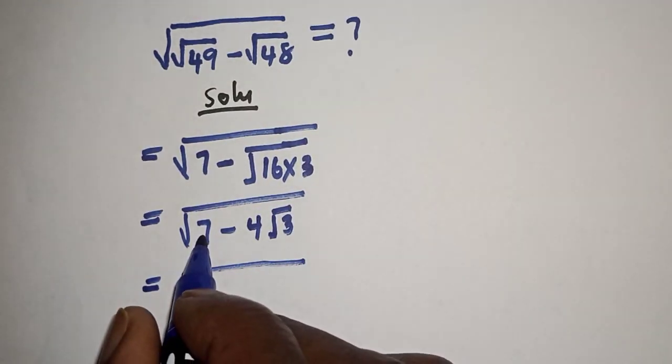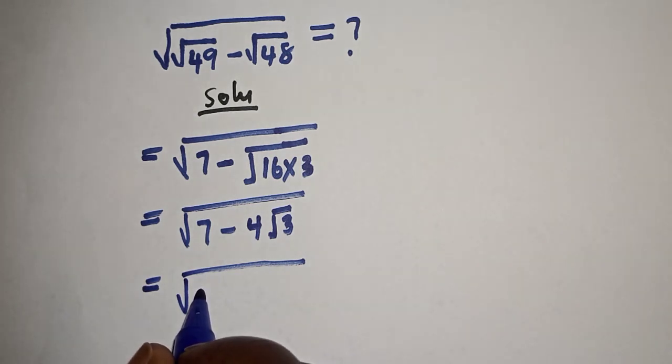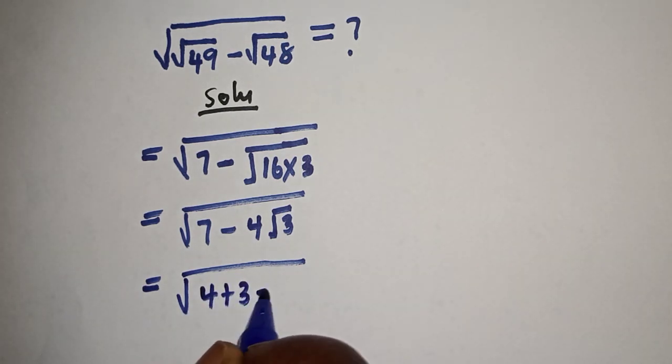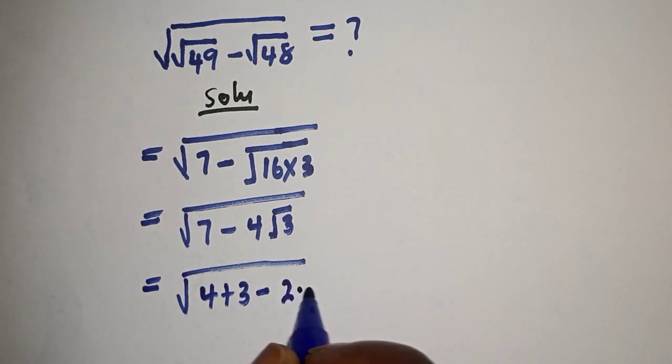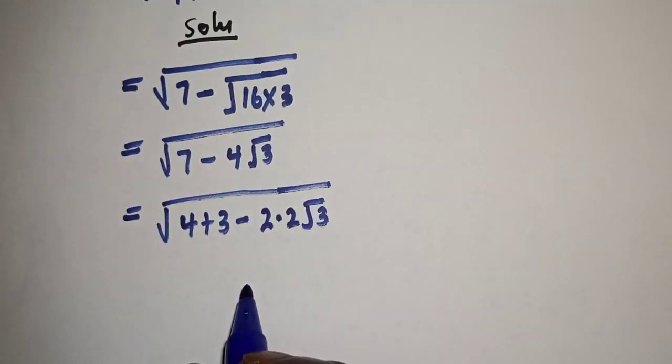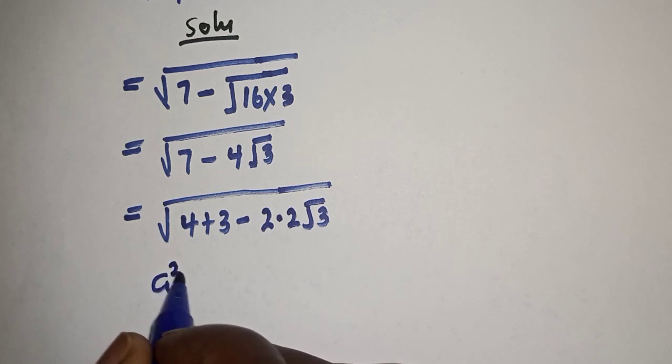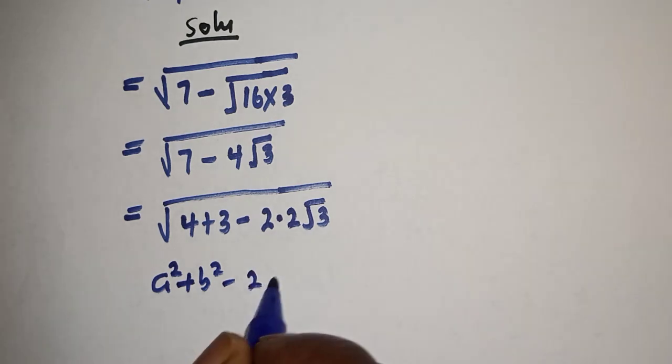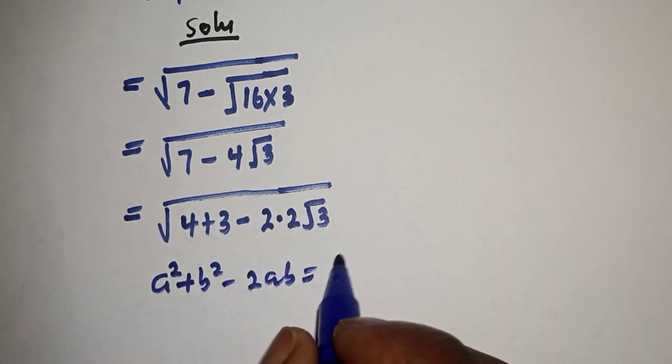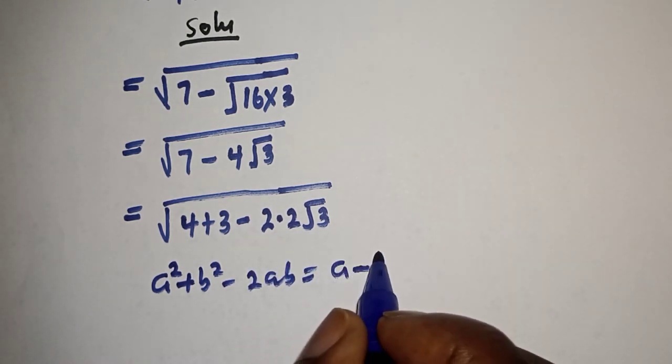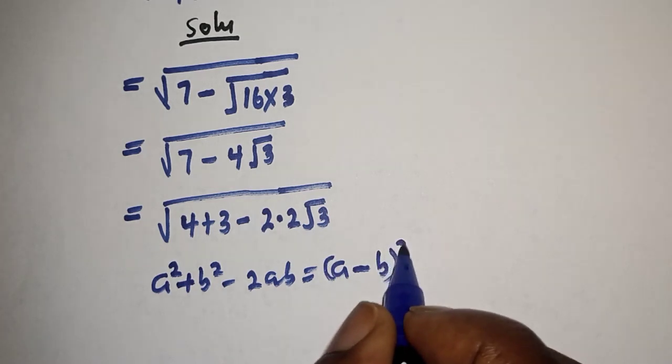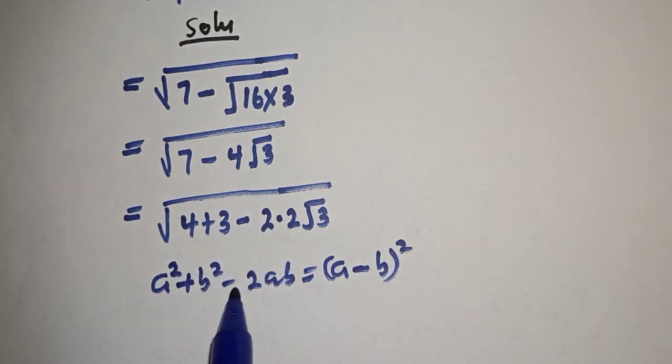square root of—7 can be written as 4 plus 3—minus this is 2 multiplied by 2 root 3. Now take note of this: that if you have a squared plus b squared minus 2ab, this is equal to a minus b squared. Then we can compare this with this.